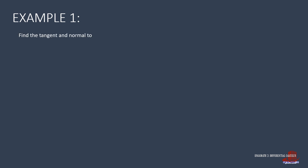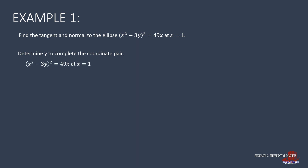The first example has the equation: the square of (x squared minus 3y) is equal to 49x, where we look for the tangent and normal equations at a point where x is equal to 1. With only half of the coordinate given, we start by determining the y-coordinate by substituting x as 1 in the equation, so we get the square of (1 squared minus 3y) is equal to 49 times 1.